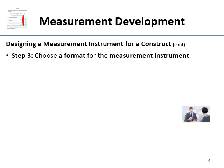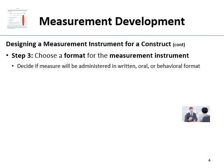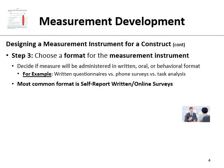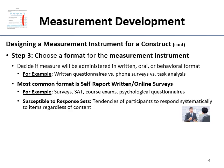Step three is choosing the format for your measurement instrument. Will it be written, oral, or a behavioral task? The most common format by far in psychology — especially for dissertations — is self-report written or online surveys. Examples include Likert scales, SAT-style exams, and psychological questionnaires. Most of what we're talking about uses Likert scales, typically 1 to 5 or 1 to 7.